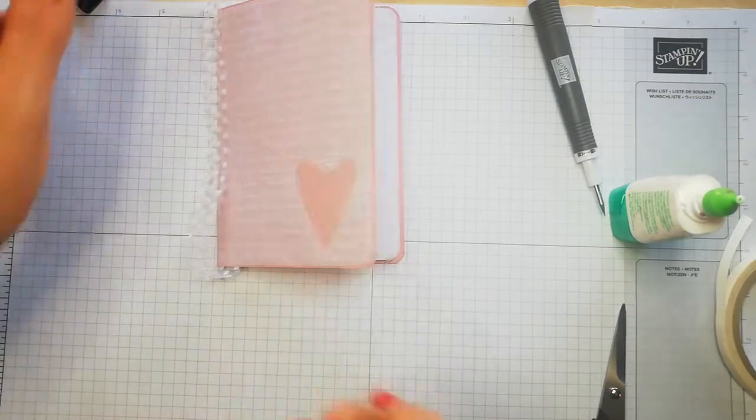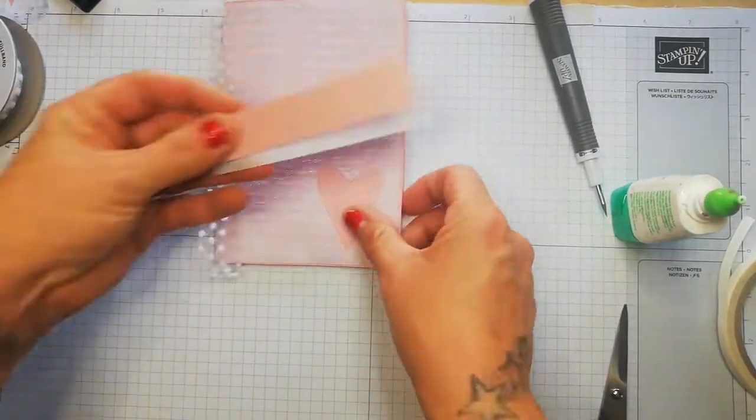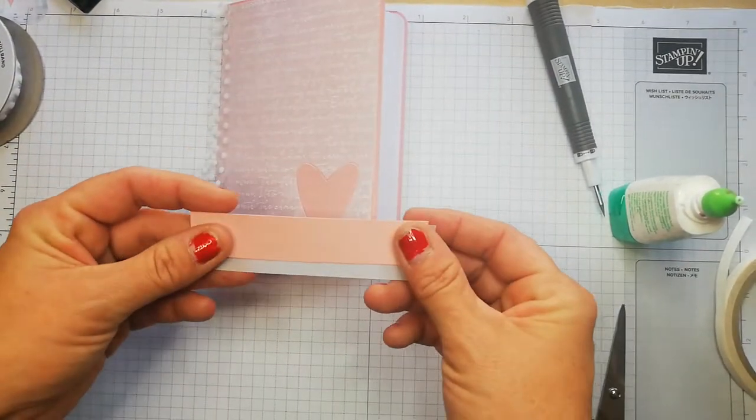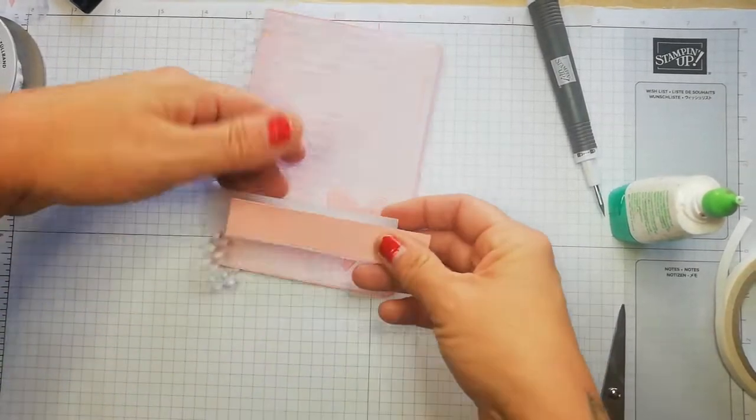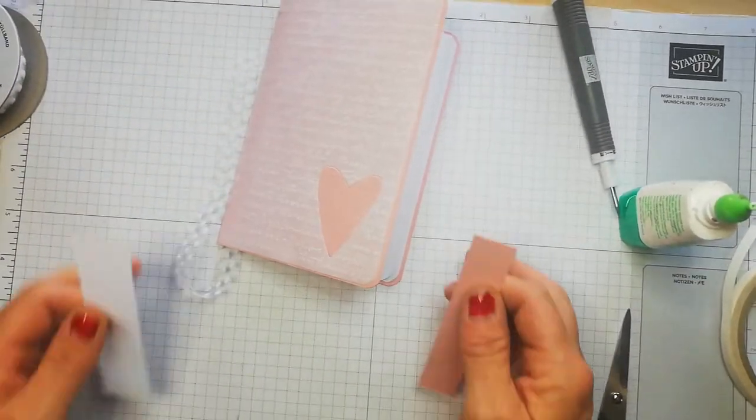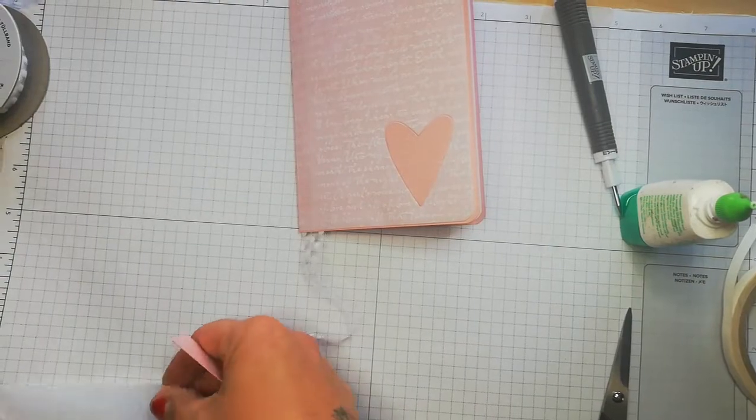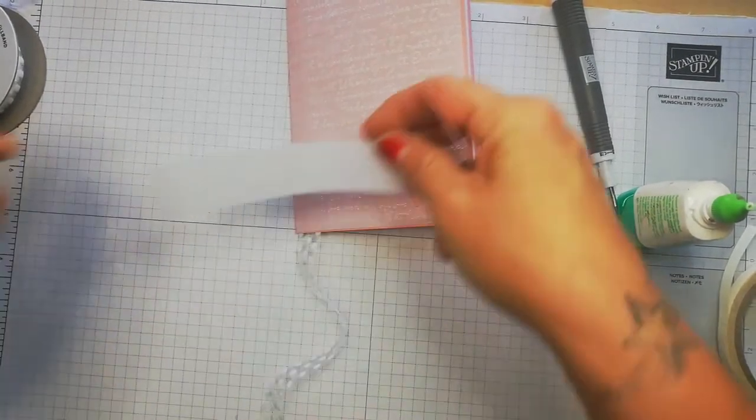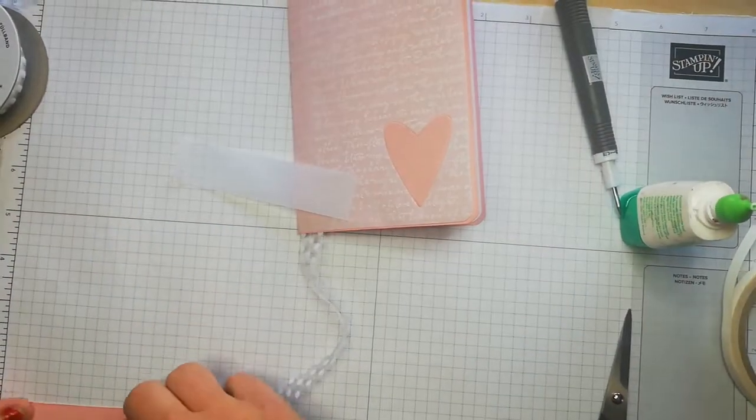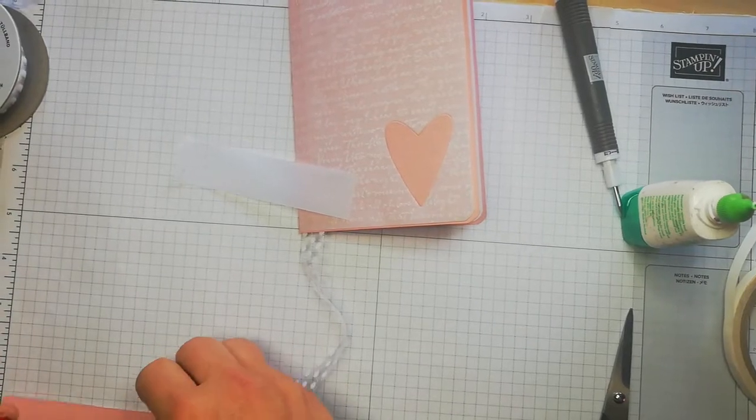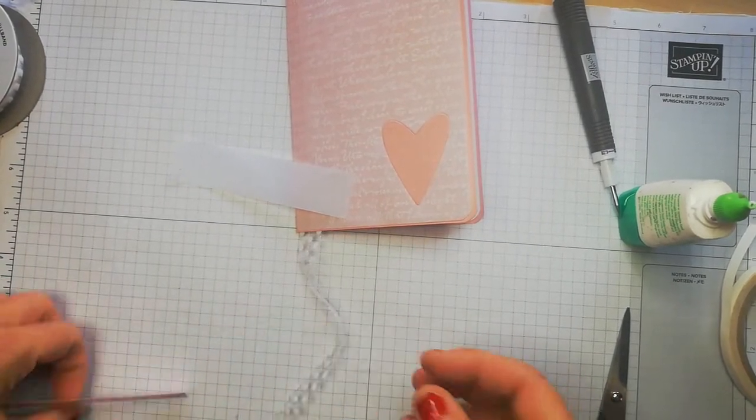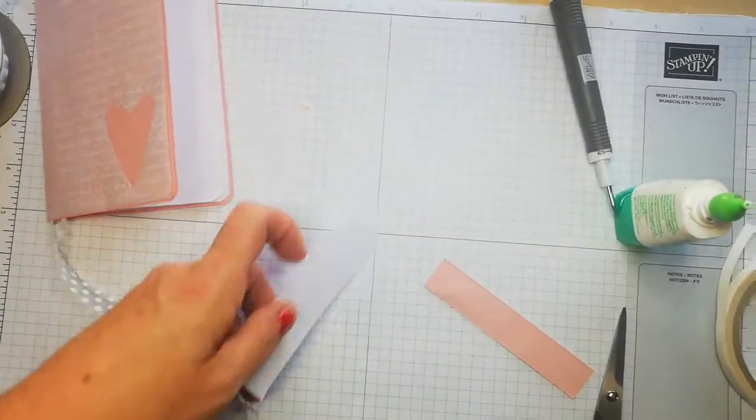I want to add a sentiment that says Mr. and Mrs., so I've got a piece of vellum here that measures one by four. The stamping layer measures three quarters by four as well, and I'm going to cut them with my triple banner.